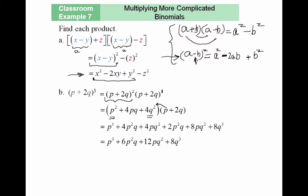Now I multiply this trinomial by p plus 2q term by term. Taking p and multiplying by each term generates three terms, then taking 2q and multiplying by each term generates three more — six terms total. Combining like terms: 4p²q and 2p²q add up to 6p²q; 4pq² and 8pq² add up to 12pq². The remaining terms are left as is for the final result.